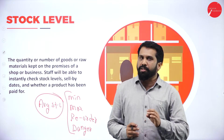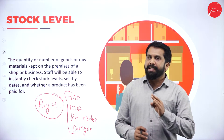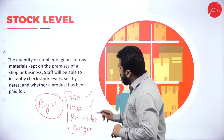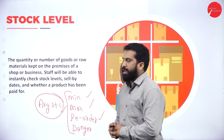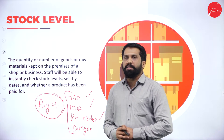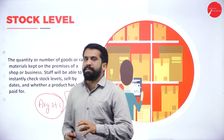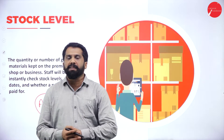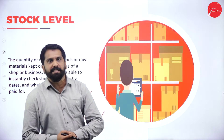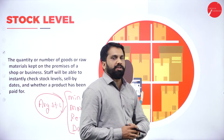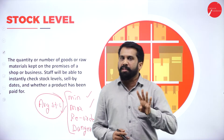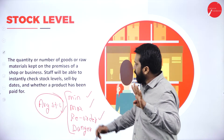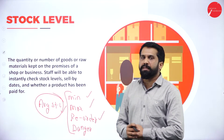In your examination, you will get 90% of the time: minimum, maximum, reorder, and average stock level. Danger stock level has been asked only once or twice so far. Usually you will get only these four: minimum, maximum, reorder, and average stock level.